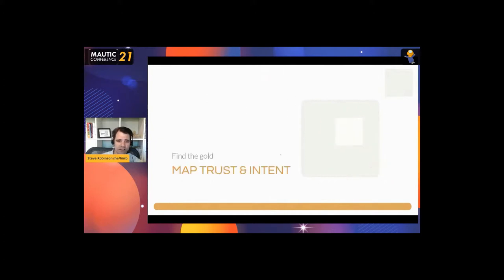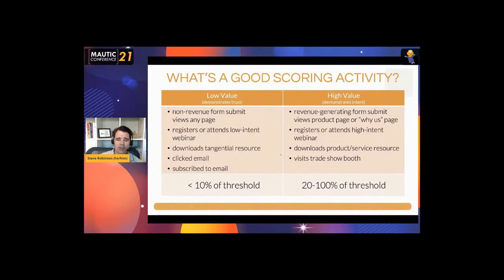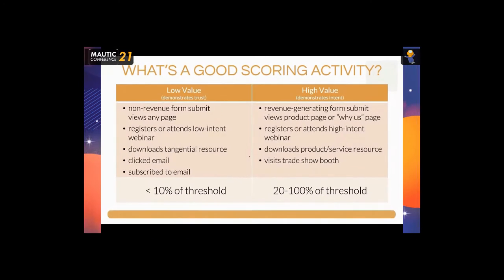Let's start with mapping trust and intent. There are really two types of scoring activity: low value scoring activity where you're trying to understand trust, and high value scoring activity where you're trying to understand intent. Low value scores — where you only add a small amount of points — include things like non-revenue-generating form submits, gated content downloads, event signups, content that's really early in the buyer's journey.